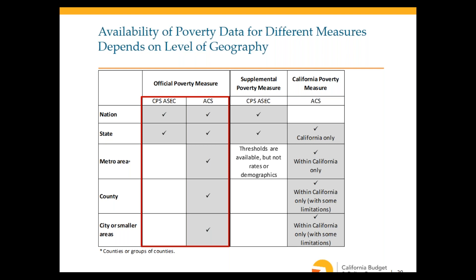The official poverty measure can be used for all levels of geography — cities, counties, metro areas, states, and the nation. However, as discussed, there are significant limitations to the official poverty measure, and many reasons — especially in California — to view it as not the best way to think about economic insecurity.